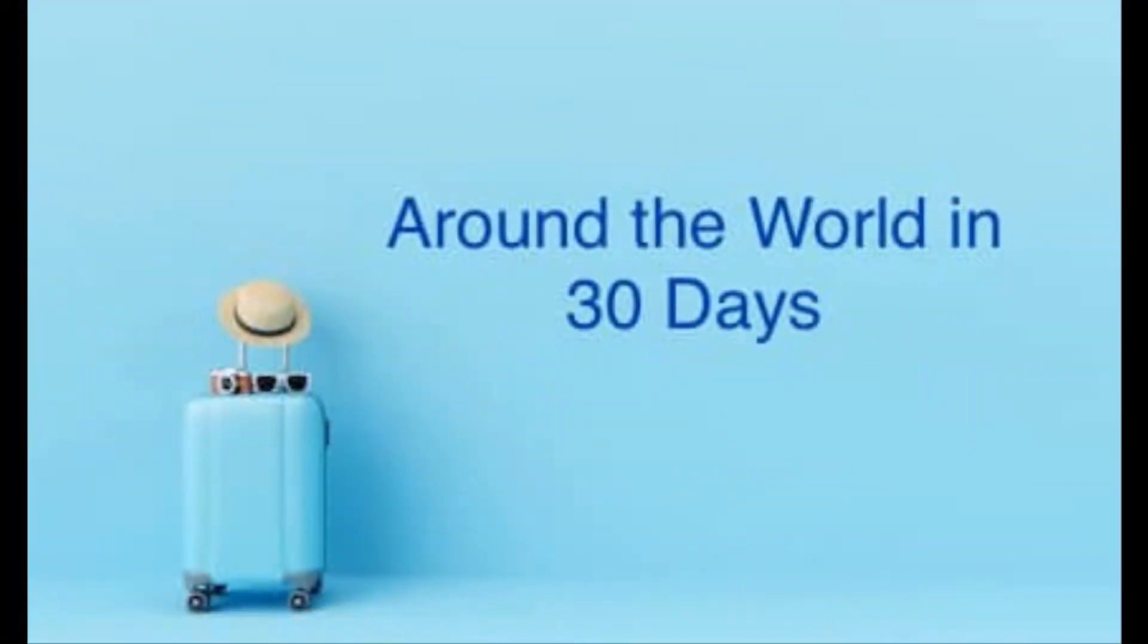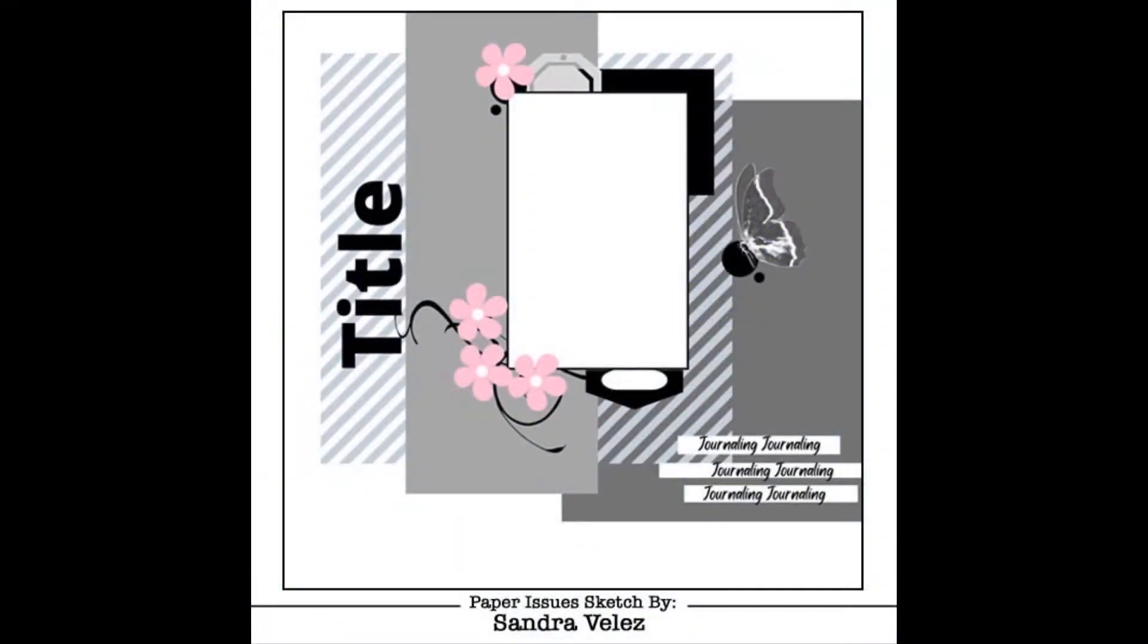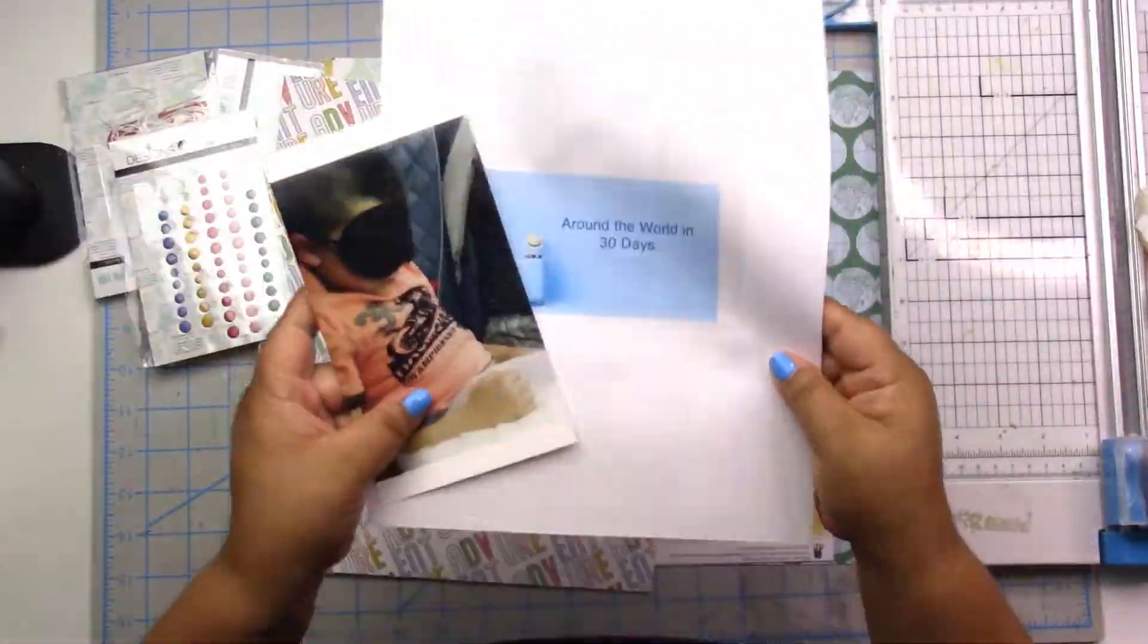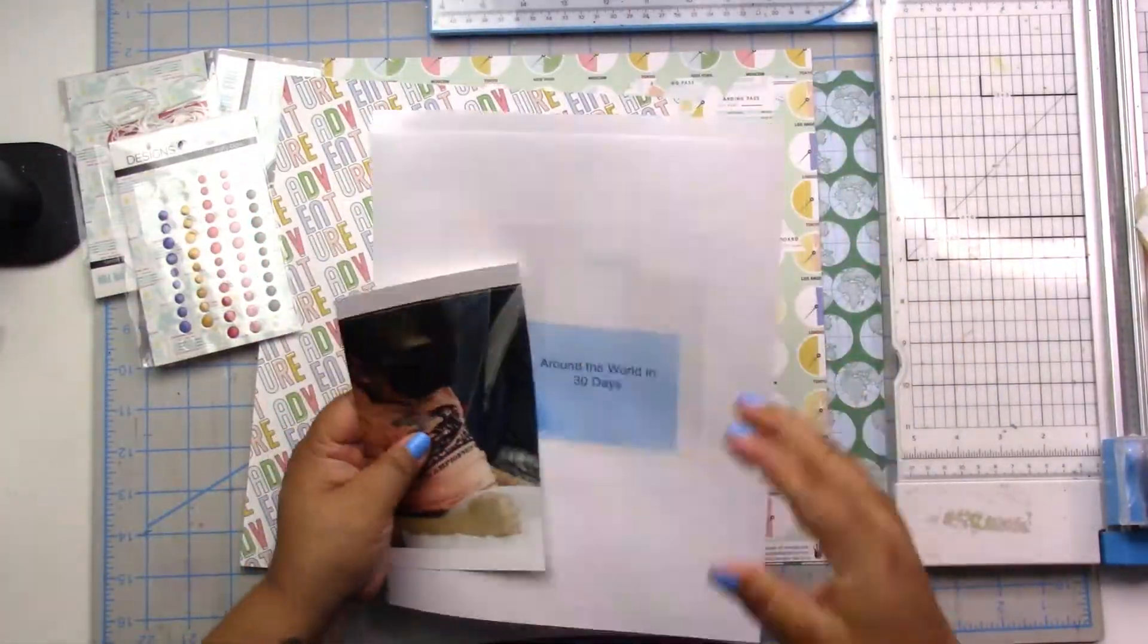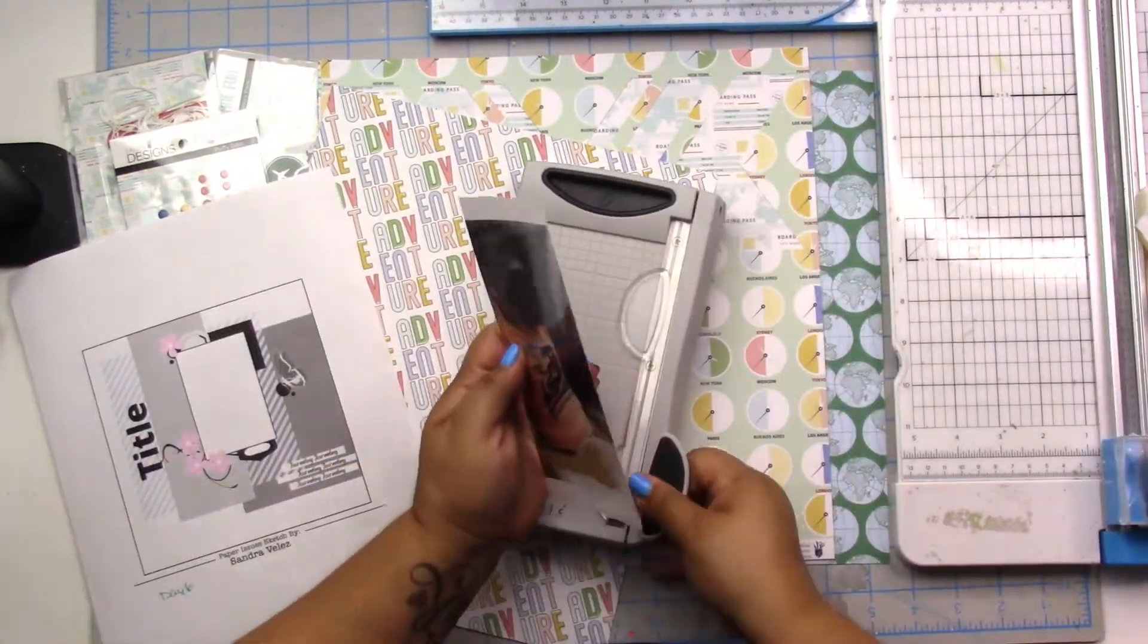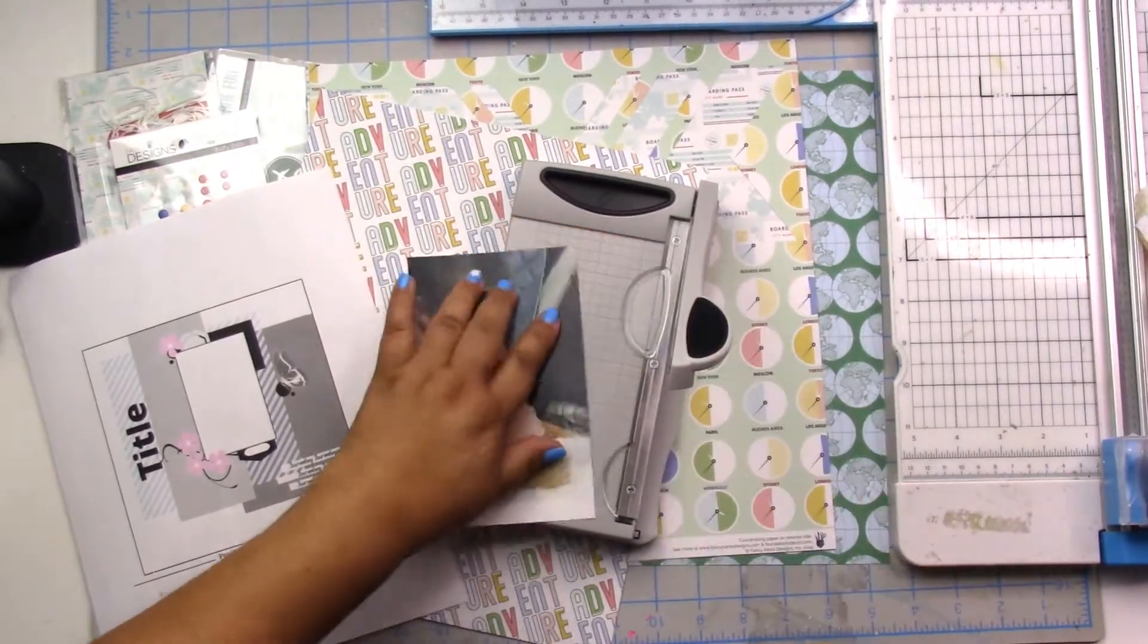Hey, it's Jodi. I have a new process video for Around the World in 30 Days, and I'm also using a Paperitch Issues sketch. It was day six from the 31 Days of Sketches in July.